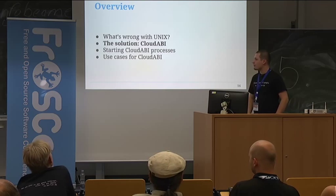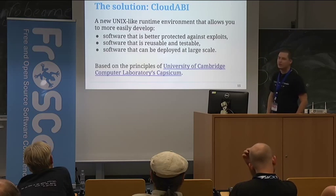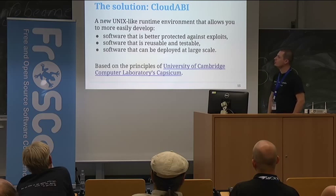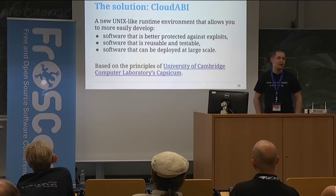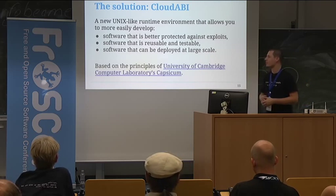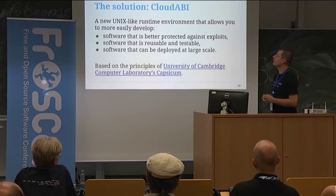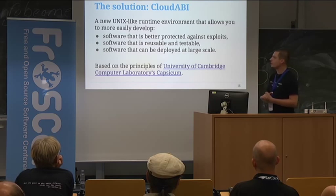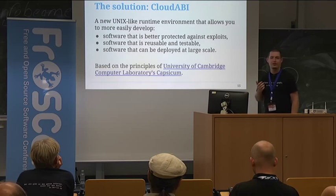Now that I've explained what I think is wrong with Unix — that it's insecure and not testable — let me show you the solution I've come up with. I've developed a new Unix runtime environment called Cloud ABI. Think of it as: Linux is capable of running Linux processes, FreeBSD is capable of running FreeBSD processes — this is like a Cloud ABI operating system running Cloud ABI processes, except that a Cloud ABI operating system does not exist. Cloud ABI is a stripped-down flavor of Unix that is better protected against exploits, so the impact of a security exploit is a lot smaller.